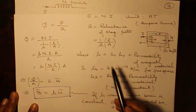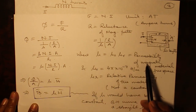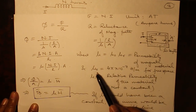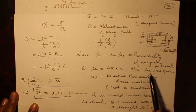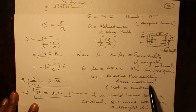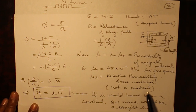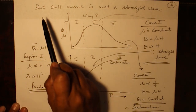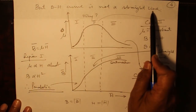Here, mu is known as the permeability of the magnetic material, which is the product of mu-naught and mu-R. Mu-naught is 4 pi times 10 to the minus 7 henry per meter for free space, and mu-R is the relative permeability of the material. A very important caution: mu is not a constant. Had mu been a constant, the BH curve would have been a straight line, but it is not — as you are aware.